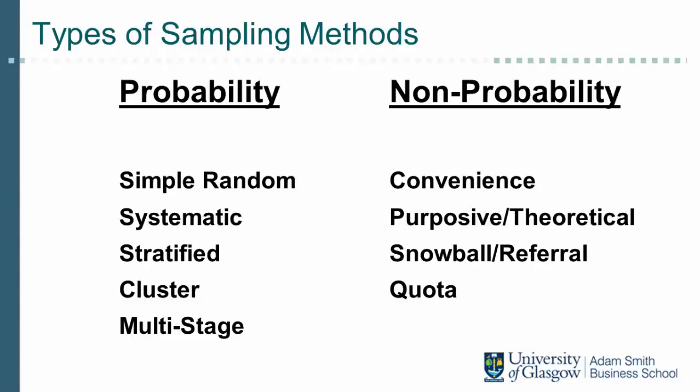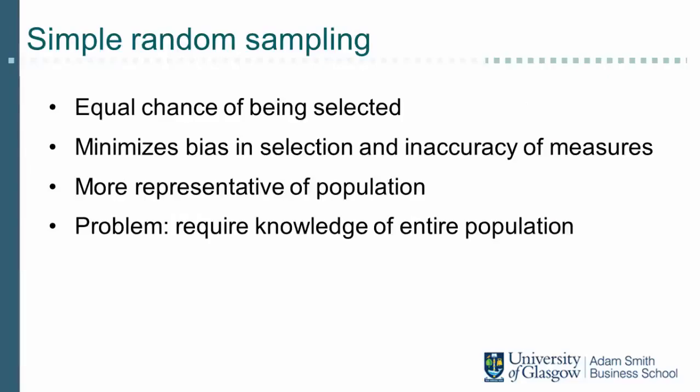There are several types of probability sampling, and I will discuss simple random sampling, systematic sampling, cluster sampling, and multi-stage sampling. The most basic form is simple random sampling, where each element in the sampling frame has an equal and independent probability of being included. Independent means that the selection of any single element does not depend on any other element being selected first — every possible combination of elements is equally likely to be sampled.